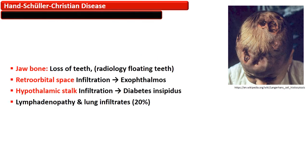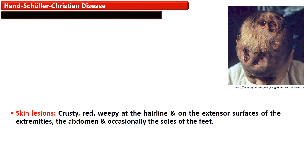When it infiltrates into the jaw bone, there is loss of teeth, and radiologically the teeth give the appearance of floating teeth. When it infiltrates the retroorbital space, it manifests as exophthalmos. When there is infiltration of the hypothalamic-pituitary stalk, it results in diabetes insipidus. Twenty percent of cases are associated with lymphadenopathy and lung infiltrates.